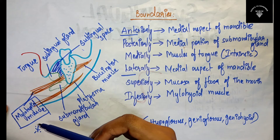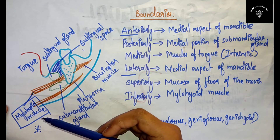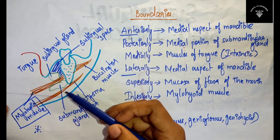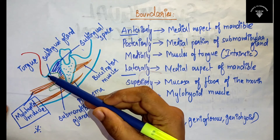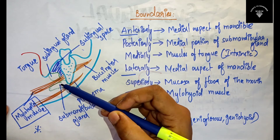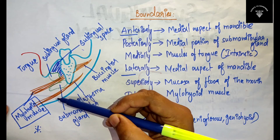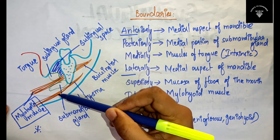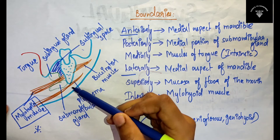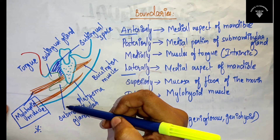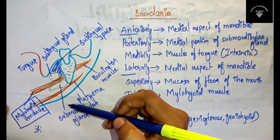The mylohyoid muscle is the most important muscle. If the infected tooth apex is above the mylohyoid muscle, then it will be sublingual space infection. And if the infected tooth apex is below the mylohyoid muscle, then it will be submandibular space infection. This is the muscle that separates the sublingual space and the submandibular space — that's why it is the important muscle to remember.